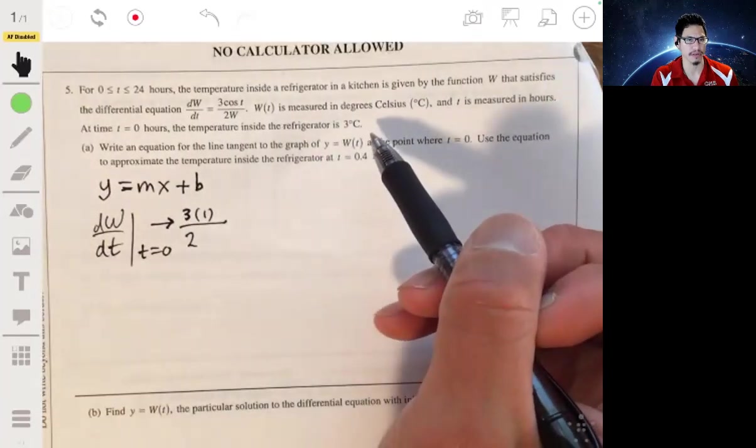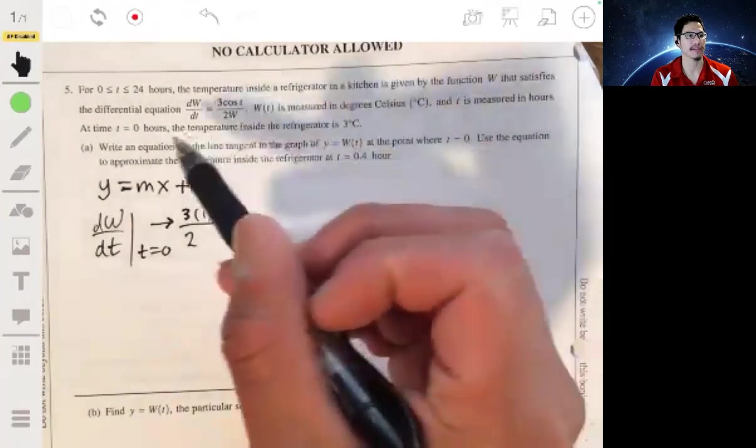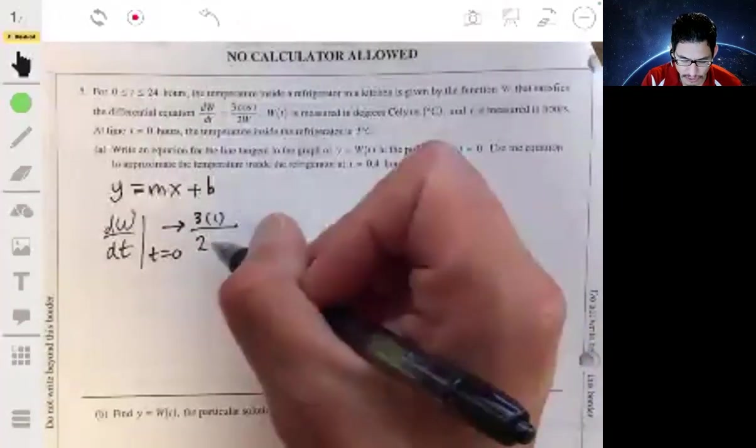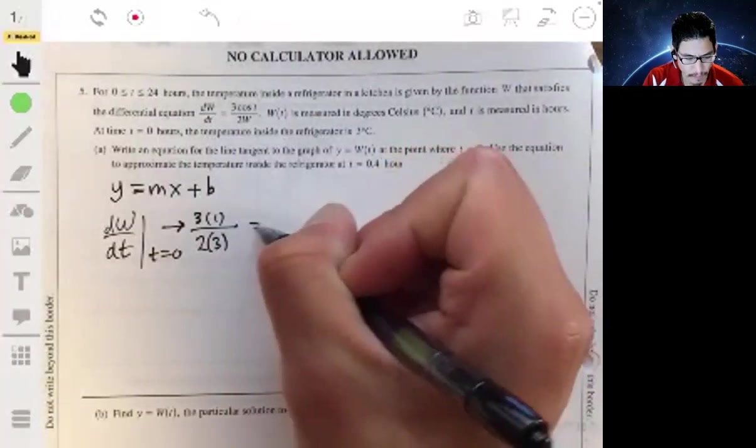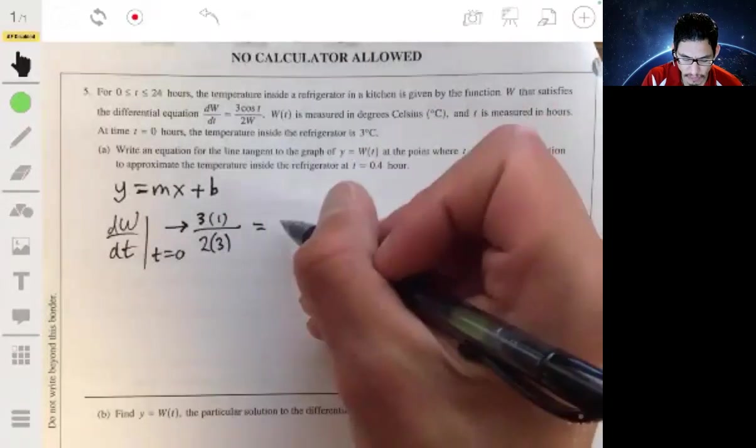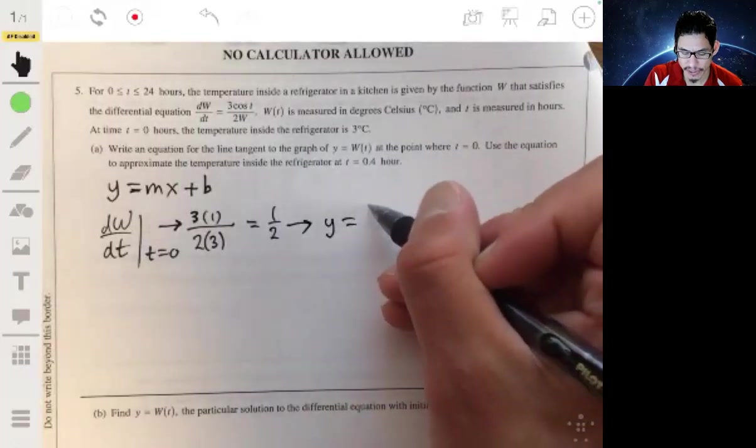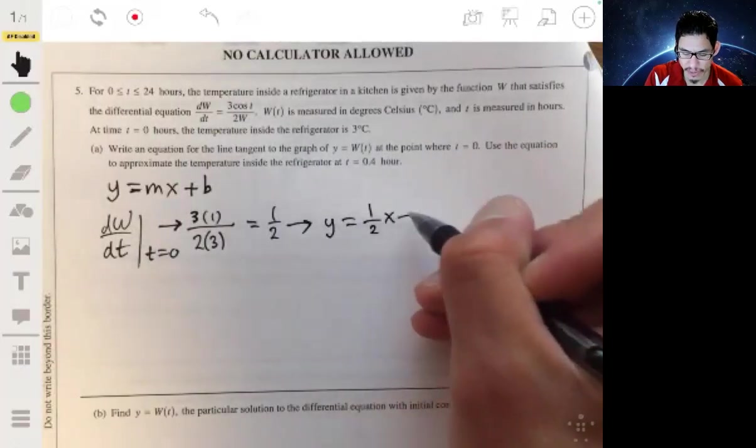And at T equals 0 hours, the temperature is 3 degrees, so this will be over 2W or 2 times 3, and the slope will then be 1 half, and so we can furthermore write our equation as Y equals 1 half X plus B.